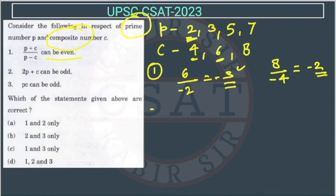So now, now let us check the second statement. Second statement is 2P plus C can be odd. So 2P plus C. If we are doing this one, this is prime number. So 2 into 2, this will be 4 plus C. So if we will take 4, 6, 8, then we will get 9 here. Because 9 is also a composite number.